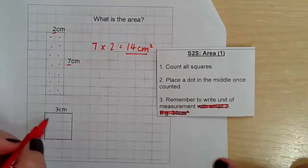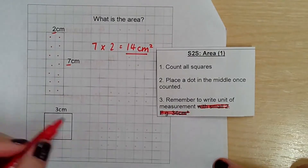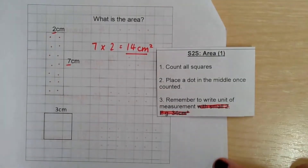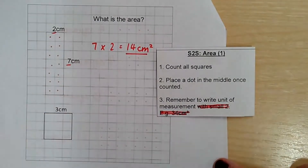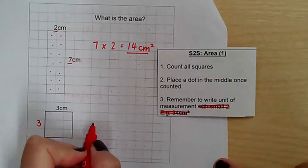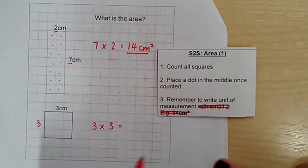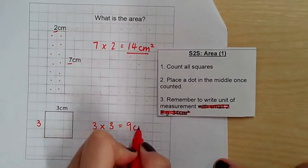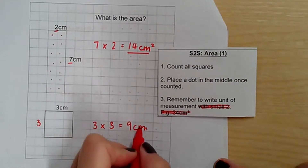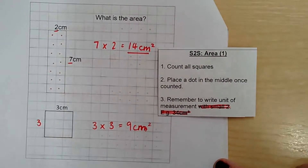Here we only seem to have the measurement of one side, which is three centimetres. However, what shape is this? It's a square. What do we know about squares? They have equal sides. So if I know this side is three, I know that side is three too. Three times three equals nine centimetres squared — don't forget the teeny tiny two.